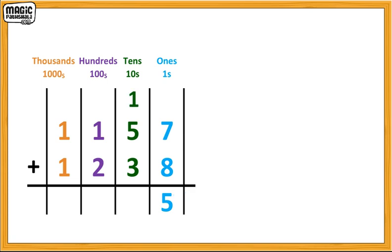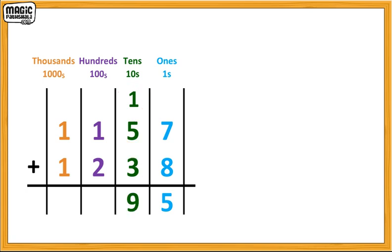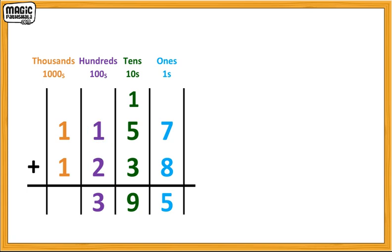Now, in the tens column, we have one plus five plus three, which is equal to nine. In the hundreds column, one plus two is equal to three. And finally, in the thousands column, one plus one is equal to two.